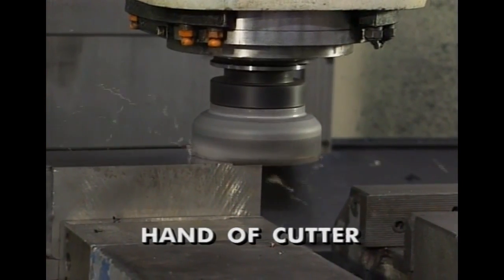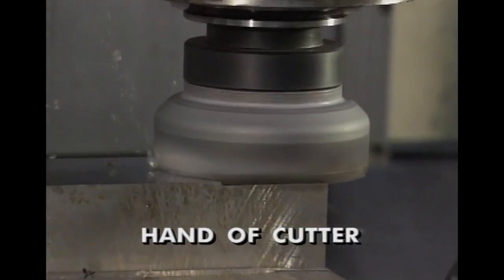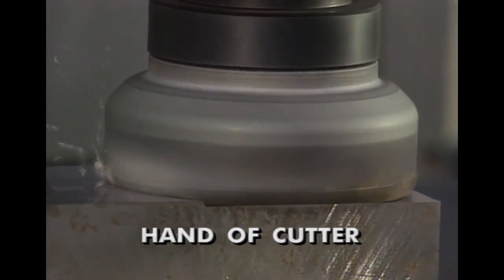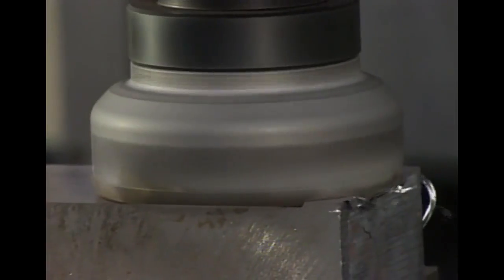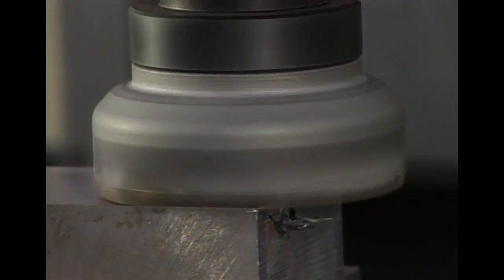The hand of the cutter is determined by examining the cutter's face while running on a machine tool. A right-hand cutter rotates counterclockwise and a left-hand cutter rotates clockwise.